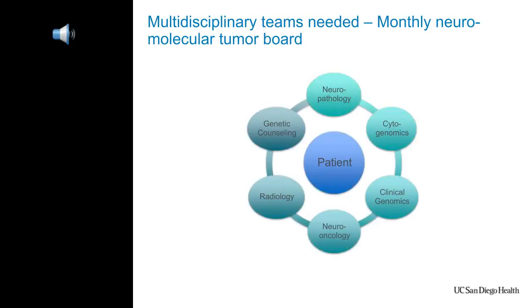These genomic assays alone can't make treatment decisions for patients — the whole process really requires a multi-disciplinary approach. We have a monthly neuromolecular tumor board with representatives from neuropathology, cytogenetics, clinical genomics, neuro-oncology, radiology, and genetic counseling to discuss cases. It's been an invaluable experience for figuring out the best diagnosis and approach for numerous cases, especially atypical ones, and a wonderful learning opportunity for all of us including our residents, fellows, and trainees.